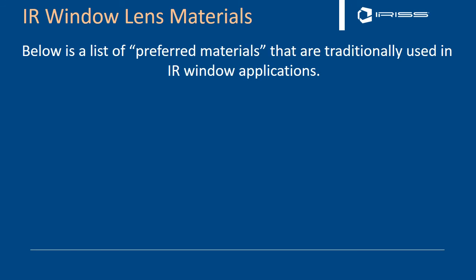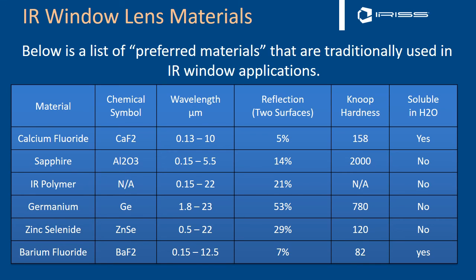There's a whole list of materials available but I'm going to discuss briefly the ones that we see used the most. Calcium fluoride is probably the most popular infrared crystal lens. It works between 0.13 and 10 microns. It has quite high reflection, a Knoop hardness that is quite weak, is very brittle, and is soluble and hygroscopic.